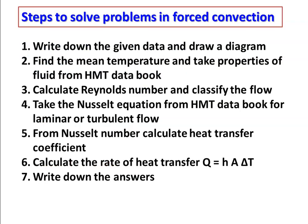We recall the steps for solving problems in forced convection heat transfer. First, read the problem statement, write down the given data and draw a diagram. Find the mean temperature of the fluid and take the properties of the fluid from the heat and mass transfer data book. Then calculate the Reynolds number and classify the flow — laminar or turbulent. When the Reynolds number is less than 2300 for internal flow, the flow is laminar; when greater than 2300, the flow is turbulent.